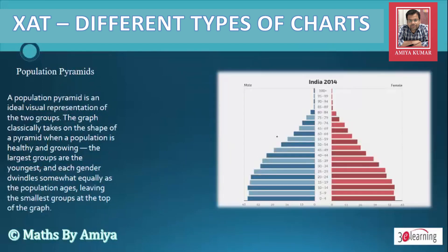Next is the Population Pyramid. This may not come in an examination, but you should understand it. If we see a population pyramid graph with both sides equally shaped, we can say the sex ratio is near to 1000 — indicating a well-balanced population. Please pause the video and read the instructions.